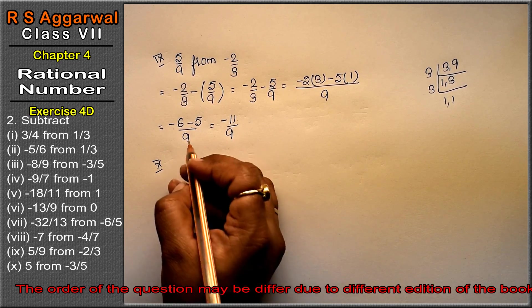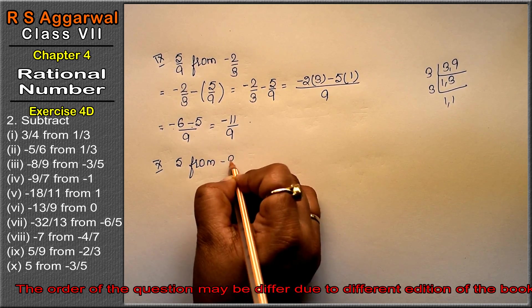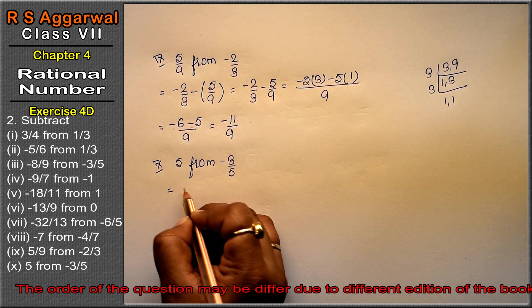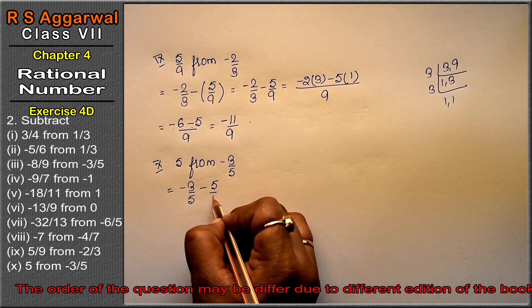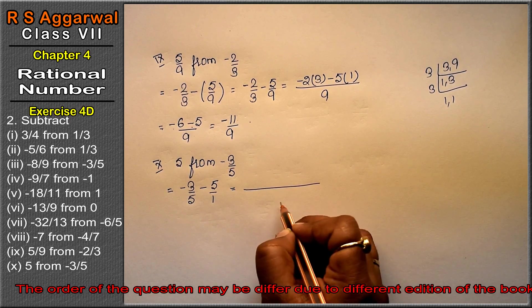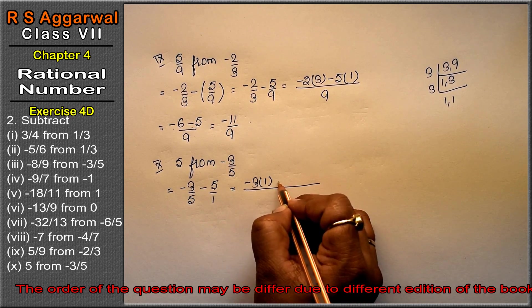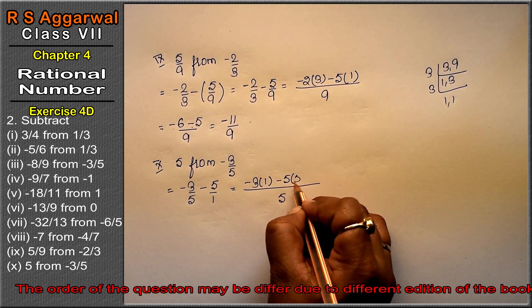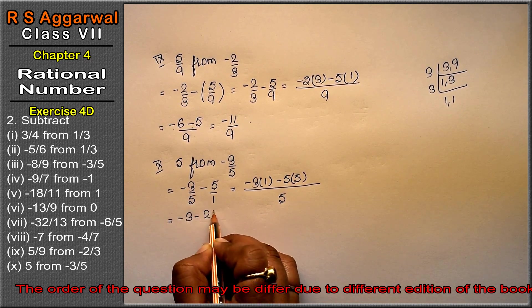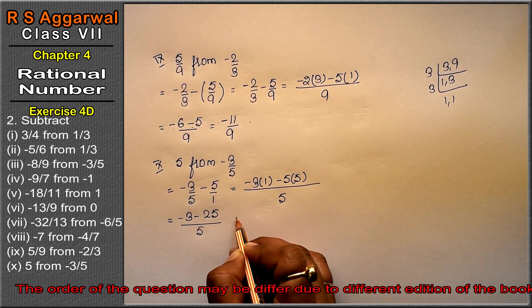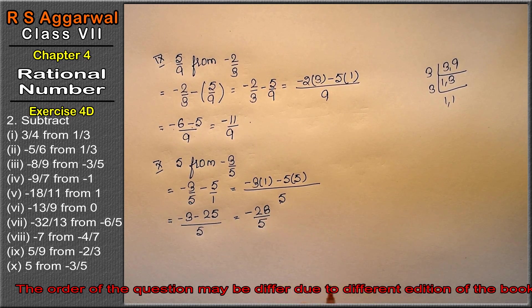Tenth part: subtract 5 from minus 3 upon 5. So minus 3 upon 5 minus 5. LCM is 5. Minus 3 minus 25 upon 5. Both subtraction means addition with same sign: minus 28 upon 5 is the answer.